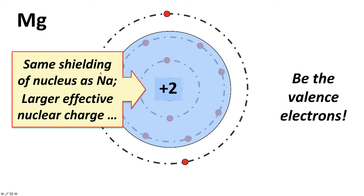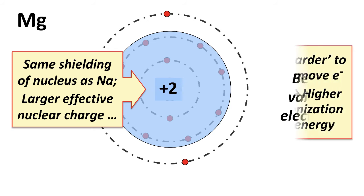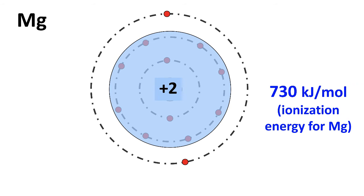Same shielding as in sodium, but a larger effective nuclear charge. So if you're one of these valence electrons, you're feeling a larger positive charge that's going to make it harder to pull away from that nucleus and its effective charge. So it's going to be harder to remove the electron. We would predict a higher ionization energy. And if we measure it, it is quite a bit higher, 730 kilojoules per mole to ionize magnesium.